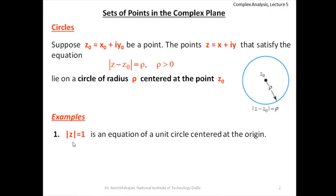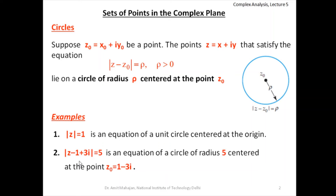For example, |z| = 1 is the equation of a unit circle centered at the origin. Similarly, |z − (1 − 3i)| = 5 is the equation of a circle of radius 5 units centered at the point 1 − 3i, so z₀ = 1 − 3i.